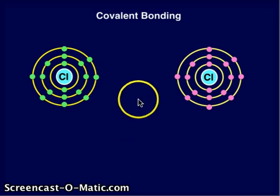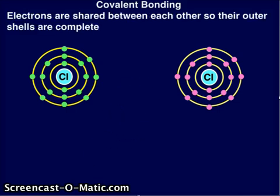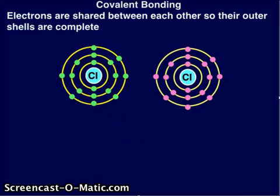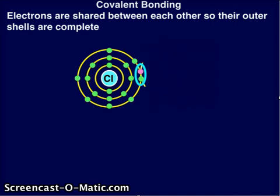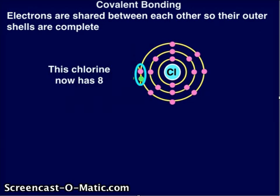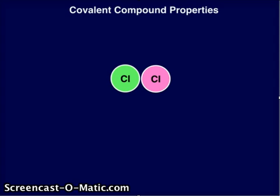Covalent bonding is when electrons are shared between each other so their outer shells are complete. Here, the chlorine on the left now has eight, and the chlorine on the right now has eight. This happens between two non-metals.